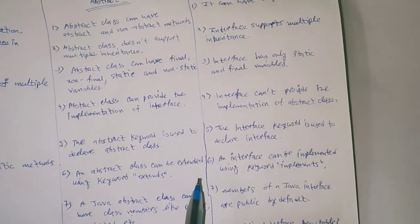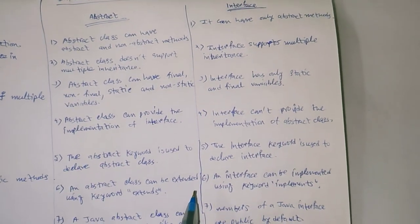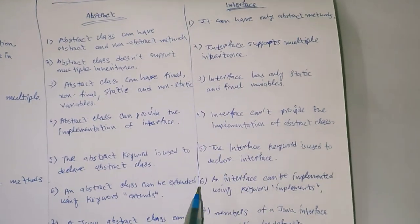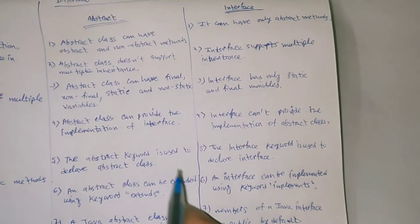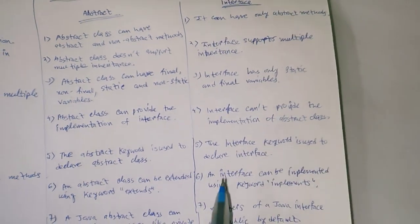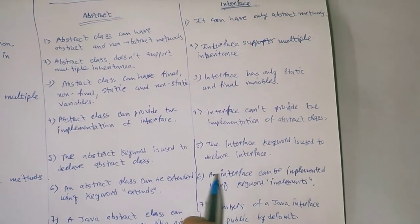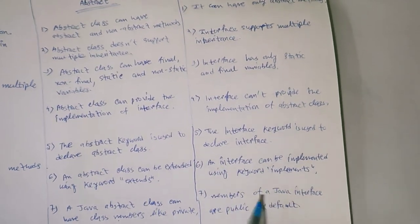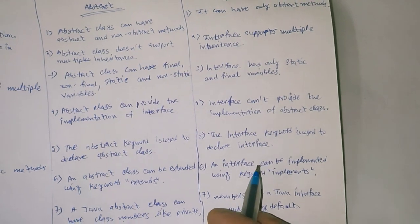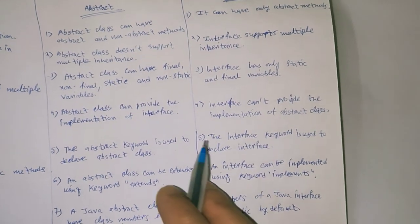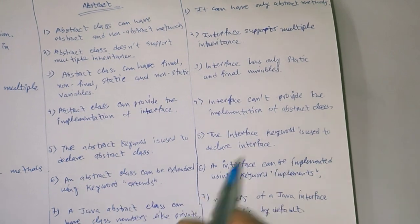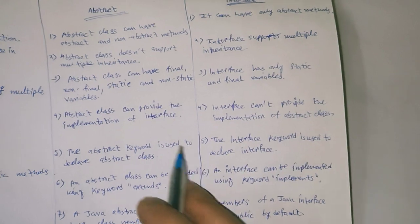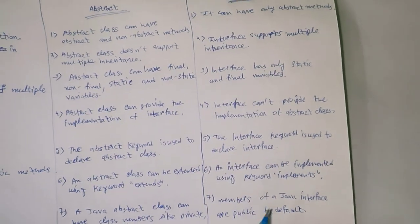An abstract class can be extended using the extends keyword. For example, 'class B extends A' makes B a child class of A. An interface can be implemented using the implements keyword — for example, 'class A implements InterfaceA'.